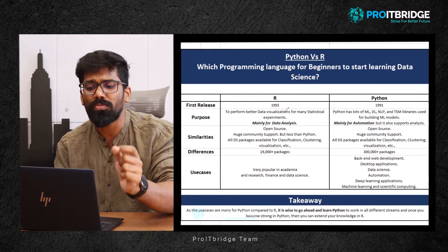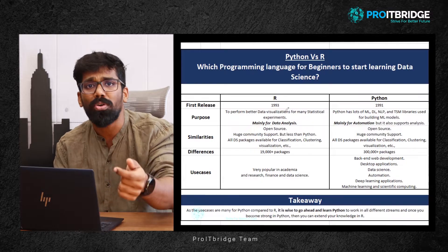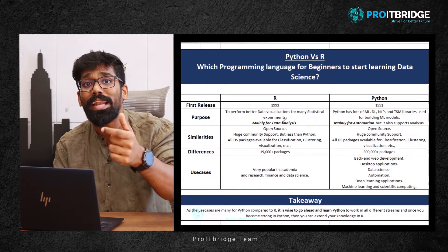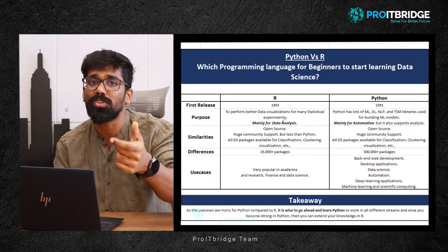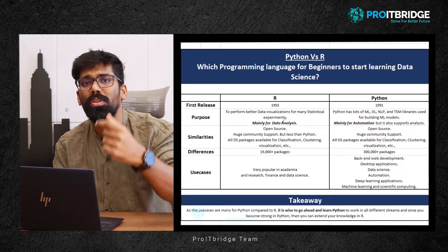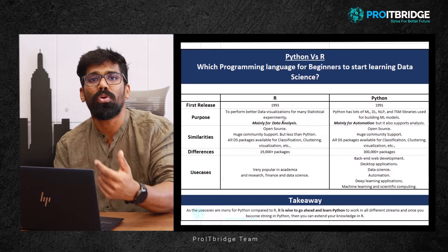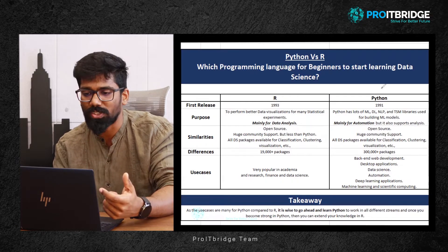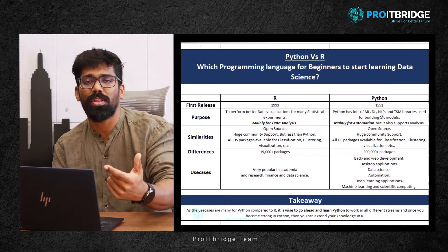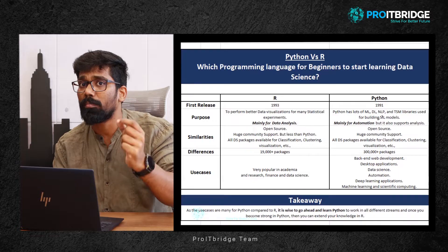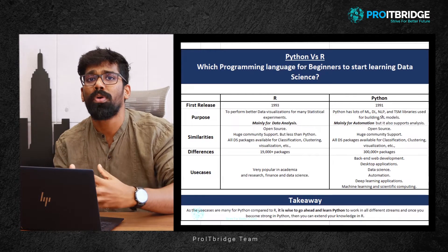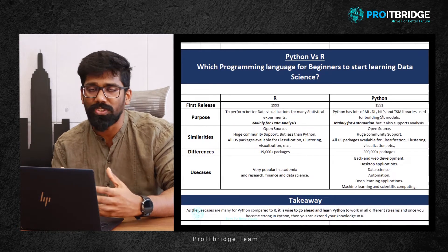So the purpose of R, why it got released into the market, was keeping data analysis use cases in mind. Based on that, they released a lot of libraries as well. But when Python got released into the market, the goal was to build a lot of automations.